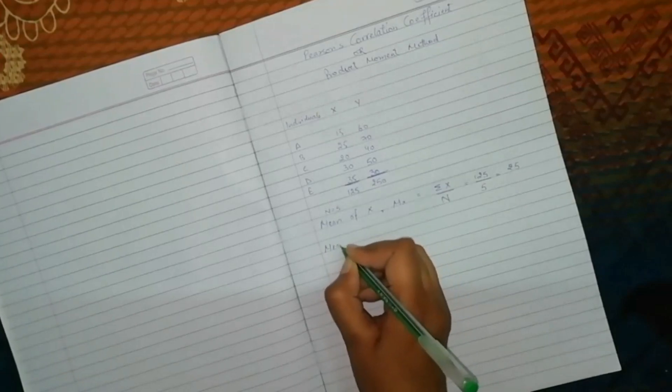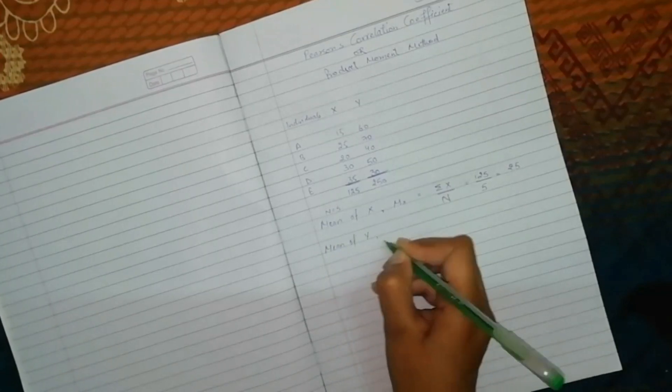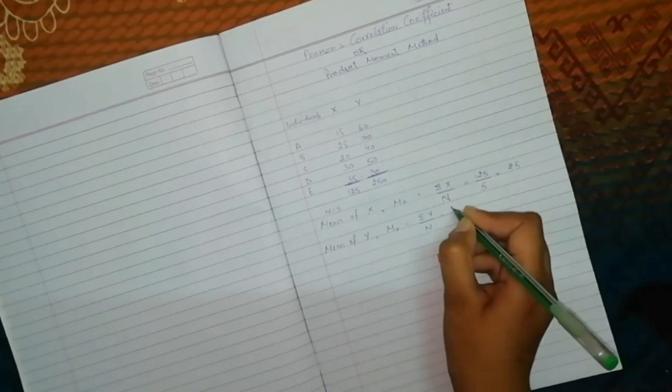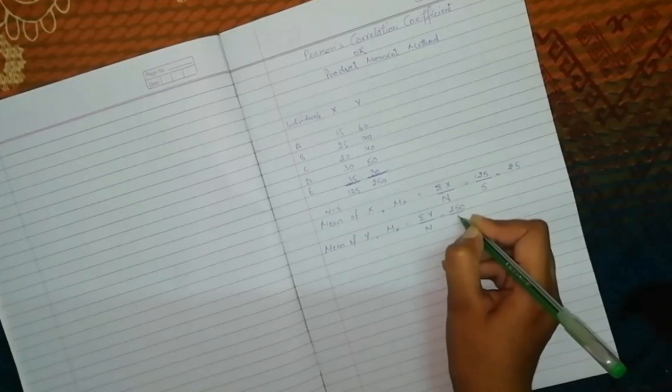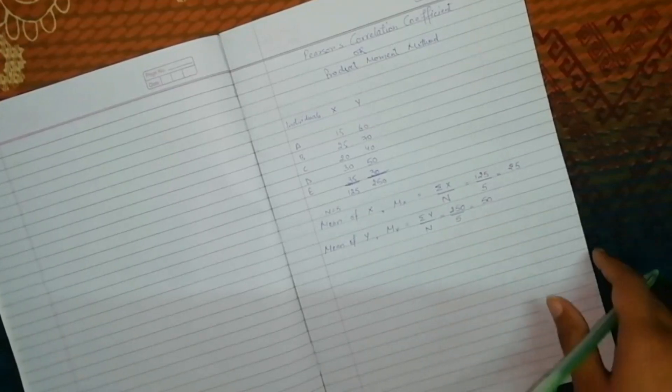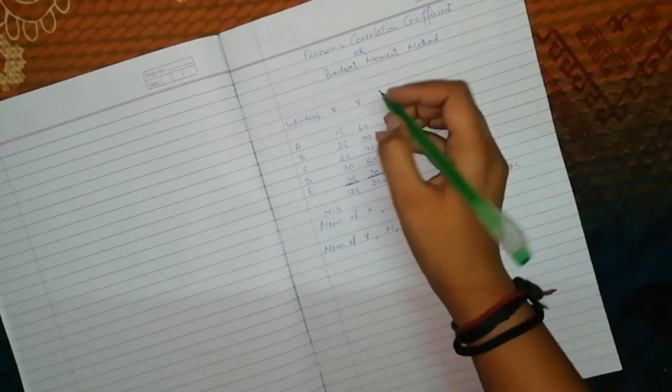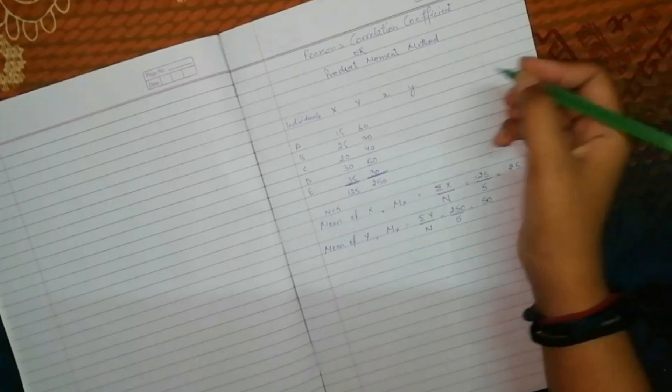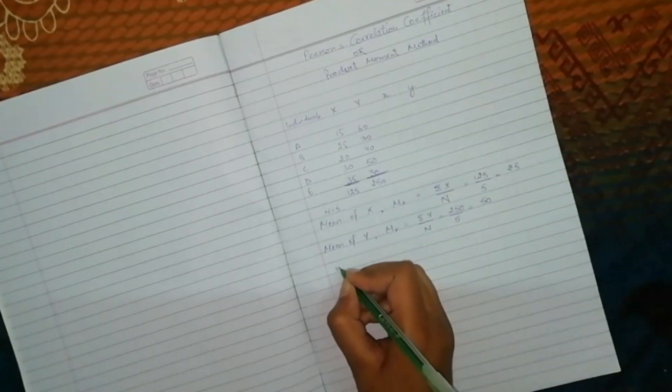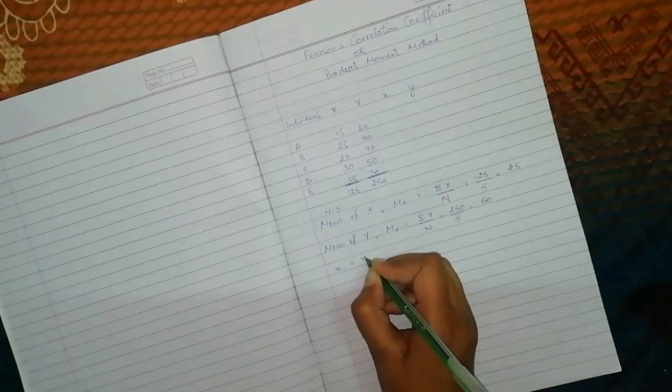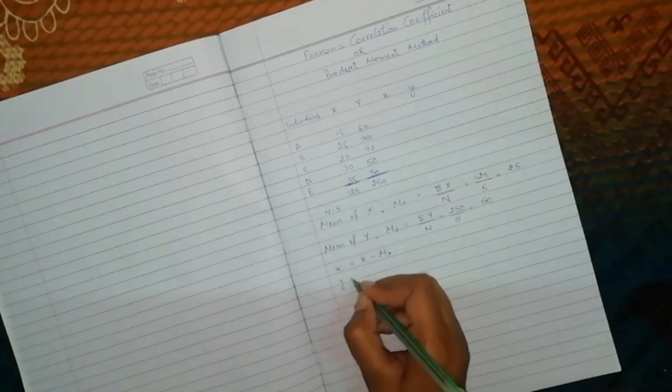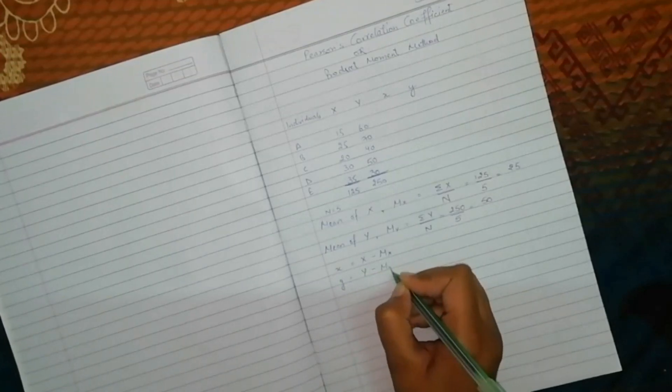Then, you will calculate mean of Y. And Y is equal to sum of Y upon N, which is 250 upon 5 is equal to 50. Now, what do you have to do? You have to calculate small x and small y. Now, how do you calculate this? What you have to do is, you have to subtract mean from X. And for Y also, Y means mean minus.